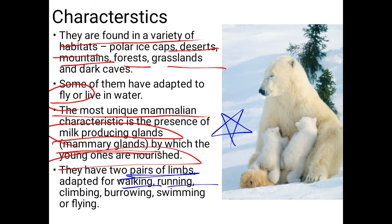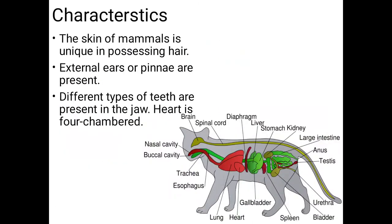Mammals have two pairs of limbs used for walking, running, climbing, burrowing like rabbits, swimming, and flying. The skin of mammals is unique in possessing hair, as seen on the human body and monkey body. Hairs are present on the body.